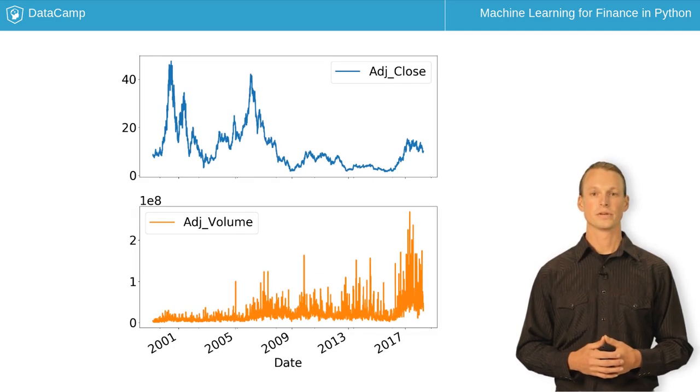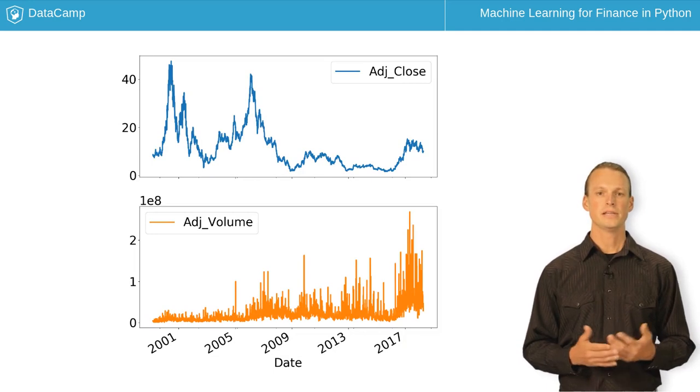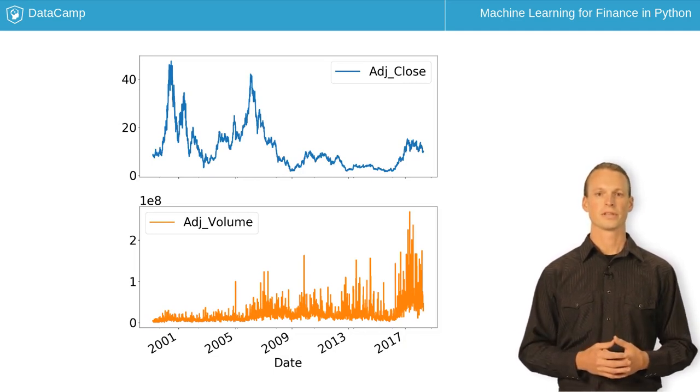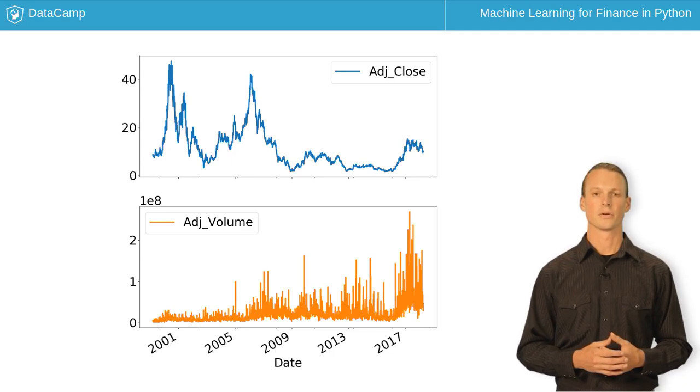We always want to do exploratory data analysis, or EDA, on new data to understand it. EDA is broad, but we'll focus on plots of raw data, histograms, scatter plots, and correlations.